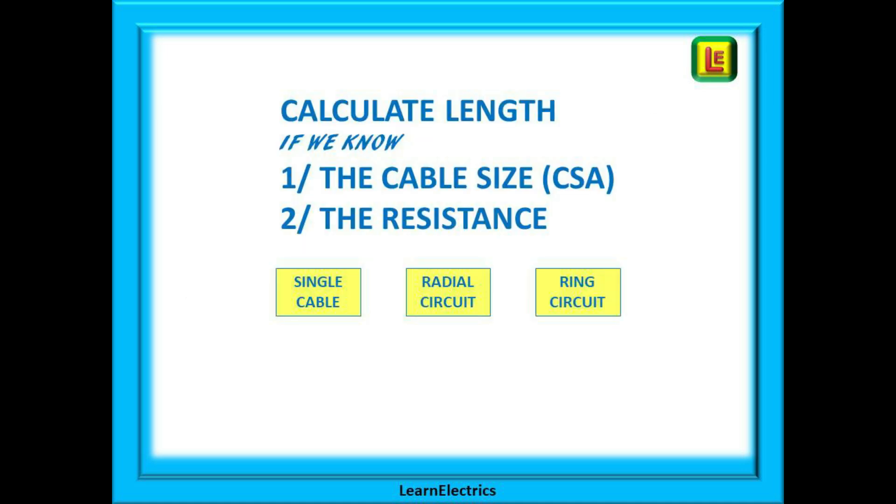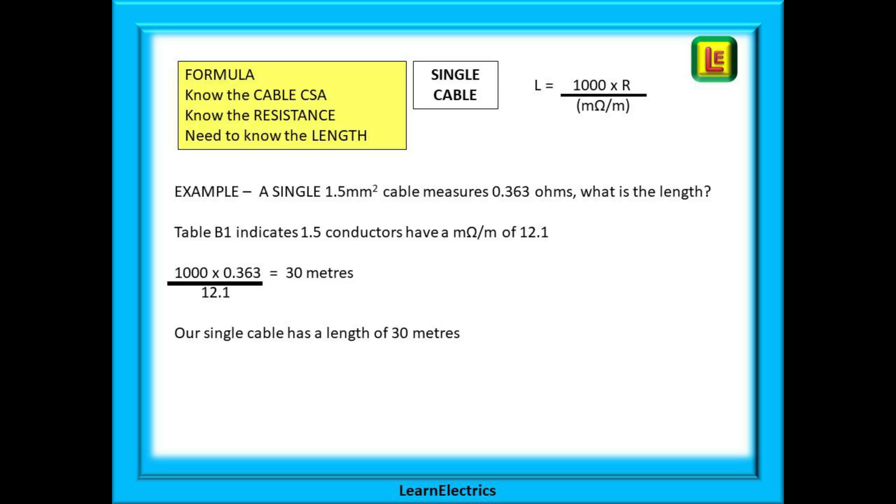Let us calculate cable lengths now from our knowledge of the cable size and the cable resistance. For a single cable, the length of the cable is 1000 multiplied by the measured resistance and then divided by the milliohms number in table B1.